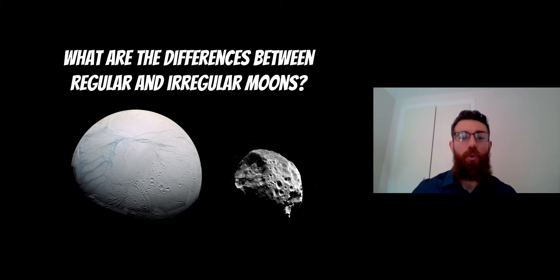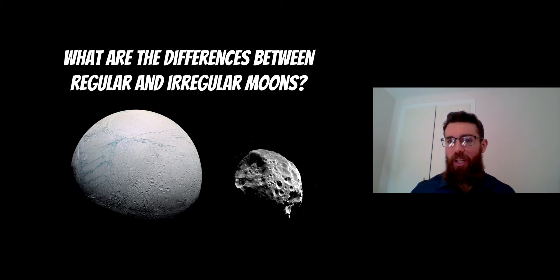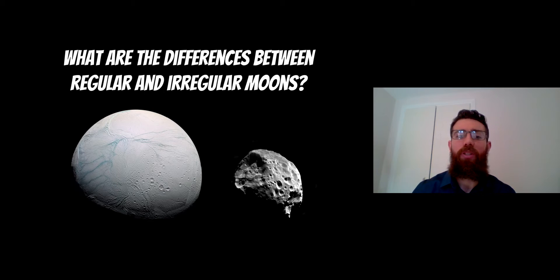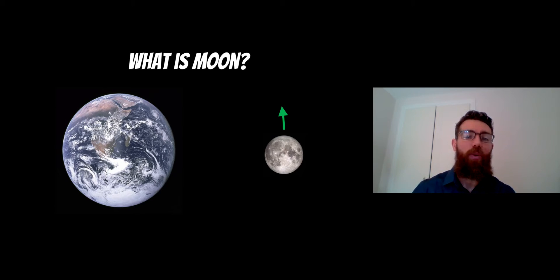Welcome to this video on moons. I want to have a look at the differences between regular and irregular moons. There are two different types of moons we have in the solar system: regular moons and irregular moons. Before we look at the differences between them, let's clarify what a moon actually is.